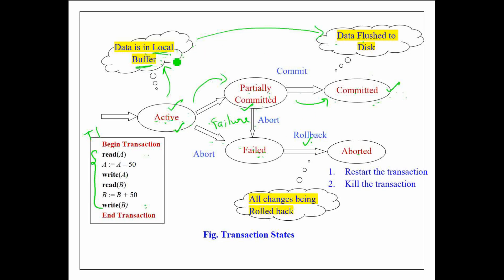When it has rolled back completely, that is, when all the changes made in the local buffer are undone, it enters into an aborted state.